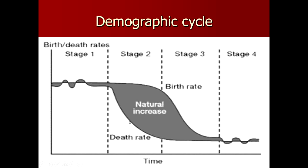In stage three, the death rate continued to reduce, people became aware of family planning services, and the birth rate started declining. This is the phase where Pakistan currently is — the birth rate has shown decline and the death rate is declining, but the population is continuously expanding because of population momentum.